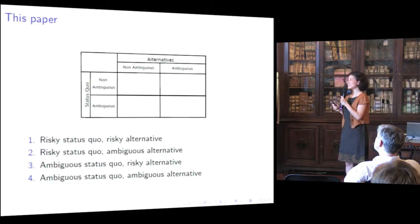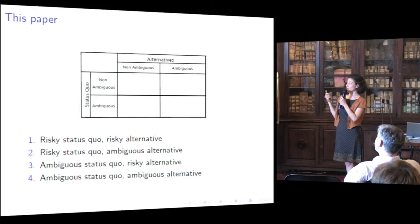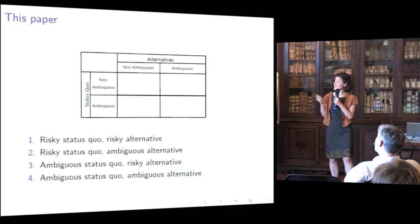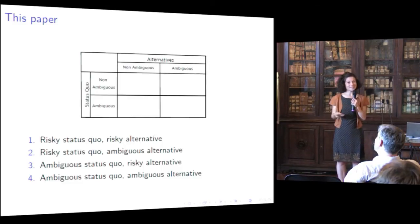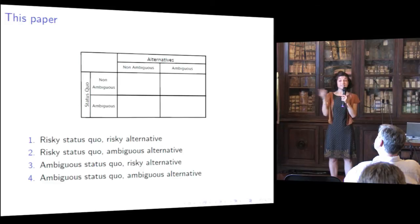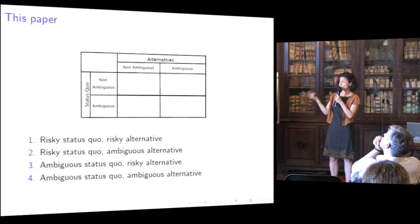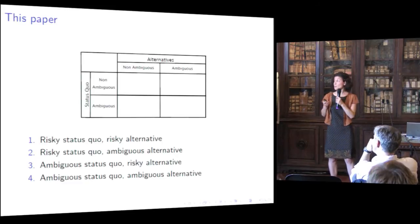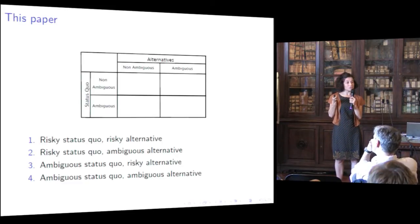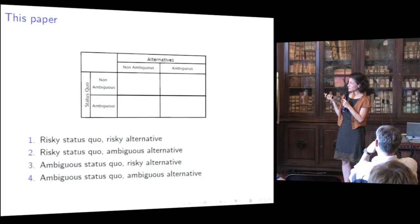These four cases are: a risky status quo with a risky alternative; a risky status quo with an ambiguous alternative; the opposite case — an ambiguous status quo with a risky alternative; and finally, an ambiguous status quo with an ambiguous alternative. The reason we decided to go with such a general approach is because we believe this is a way to disentangle two families of theories about status quo bias — theories that differ not just in the details but in the deeper psychological motives behind the bias.